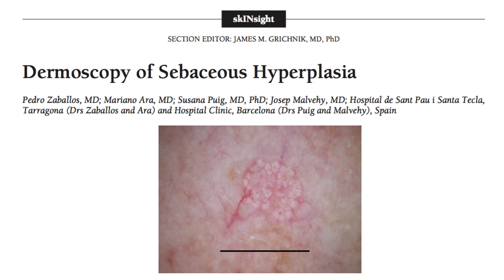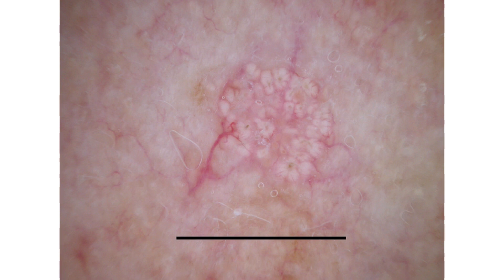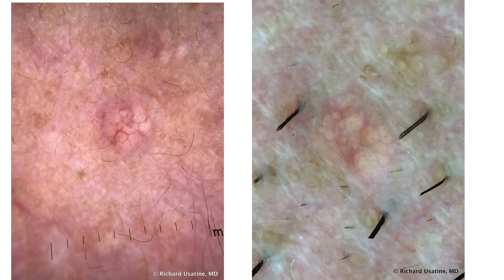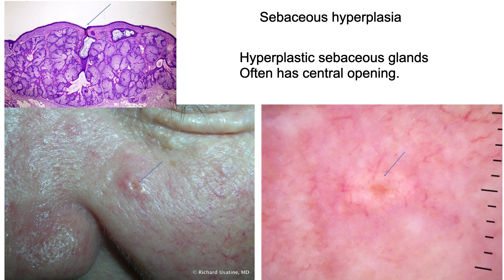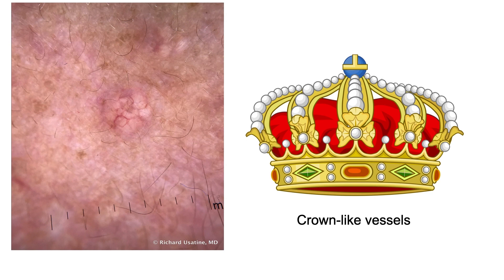Looking at sebaceous hyperplasia, this fine article gives us a great photograph showing that popcorn-type pattern and the blood vessels that look like a crown. Here are photos showing the crown pattern and the popcorn pattern. The popcorn represents the hyperplastic sebaceous glands. Here is the histology and clinical view, showing the little opening where the sebum can come out and then the glands with the crown vessels around them.